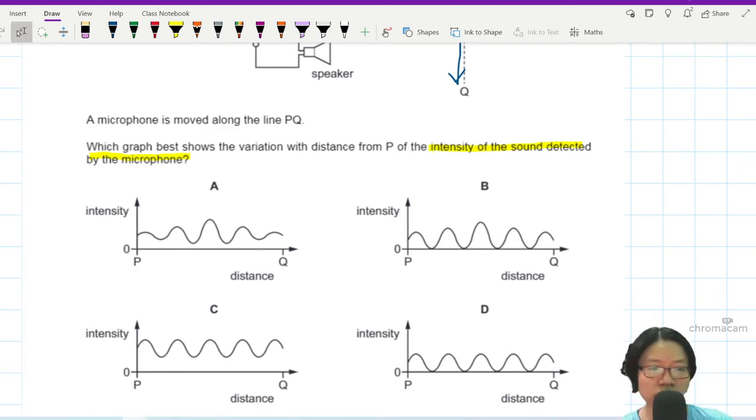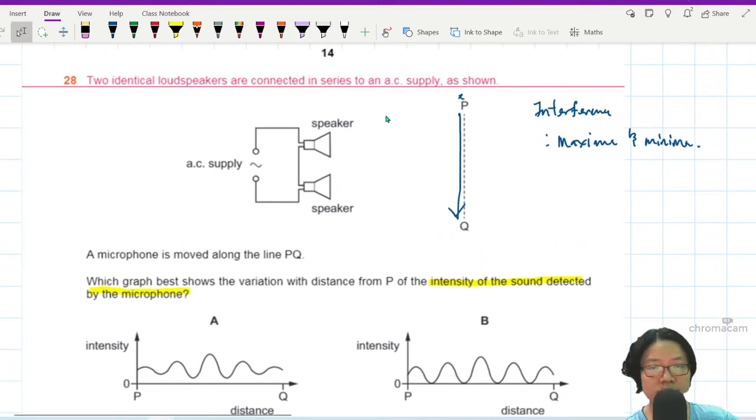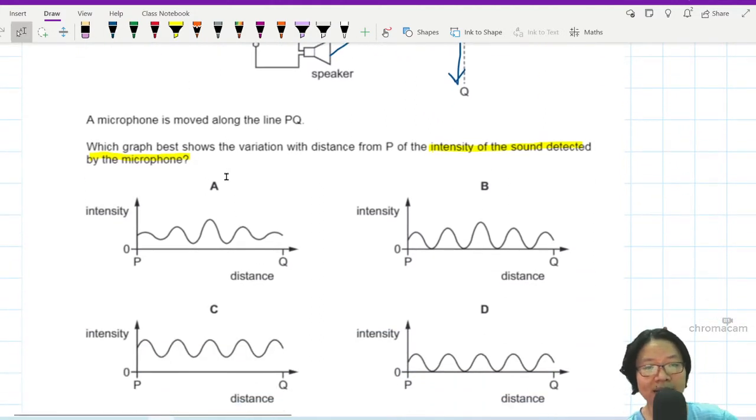And the reason for that is because here would be the loudest, because here the wave travels the least. Let's say for example, you take a random point here. This speaker wave will travel very far. So the maximum will be less loud because the sound wave travels further. So I expect the intensity to decrease.